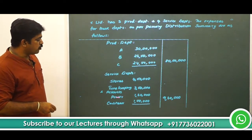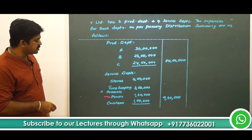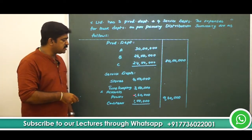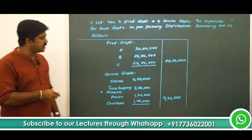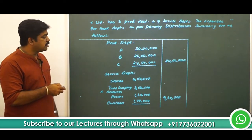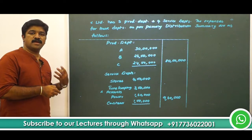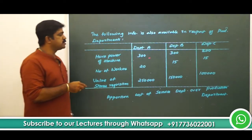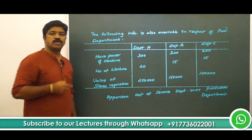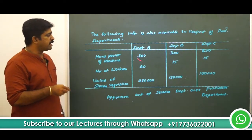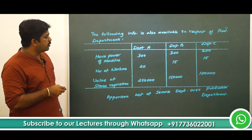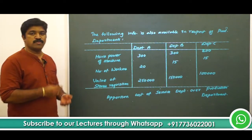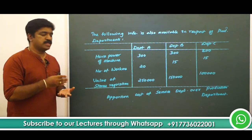Horsepower can be related with the power department. There is a service department called the power department and their expense is 1,60,000 — that is basically for these 3 production departments. So on what basis can we apportion this 1,60,000? We can apportion it on the basis of 3:3:2, because department A's horsepower requirement is 300, B is 300, and C is 200. So we can make the ratio 3:3:2.